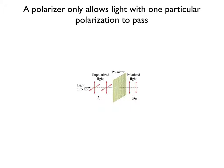A polarizer is a piece of material that only allows light with one particular polarization to pass — think of the slot in the picket fence that only allowed our rope waves to pass if they had the right polarization. Notice from the diagram: unpolarized light coming from the left reaches the polarizer, but the polarizer only passes light of a single polarization. Incidentally, the intensity of the polarized light coming out of the polarizer will be one half of the original intensity.